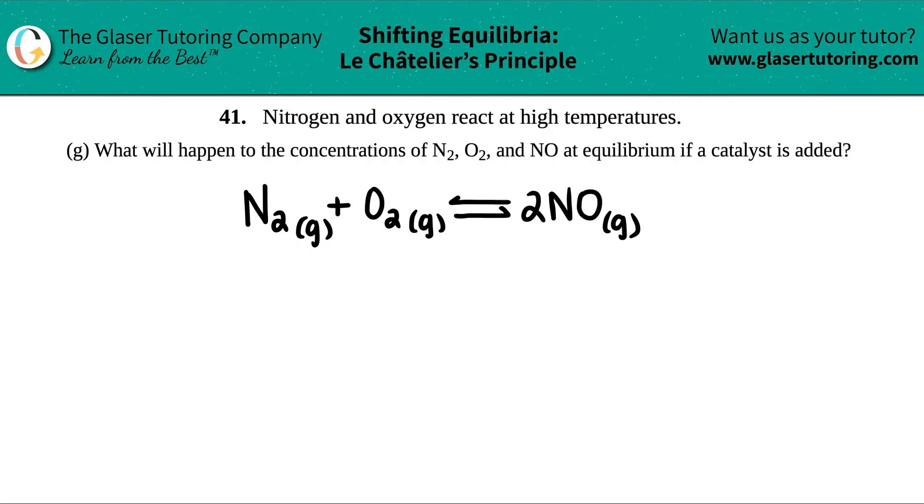Number 41. Nitrogen and oxygen react at high temperatures, and then we have letter G. What will happen to the concentrations of N2, O2, and NO at equilibrium if a catalyst is added?